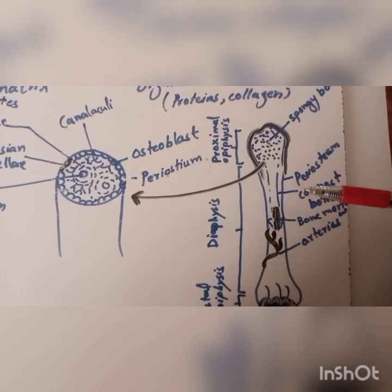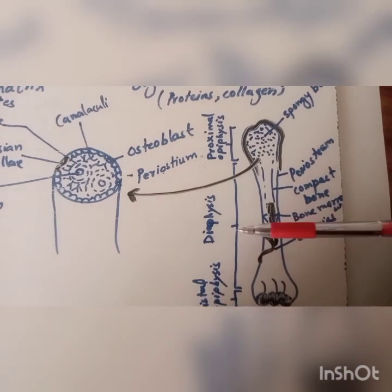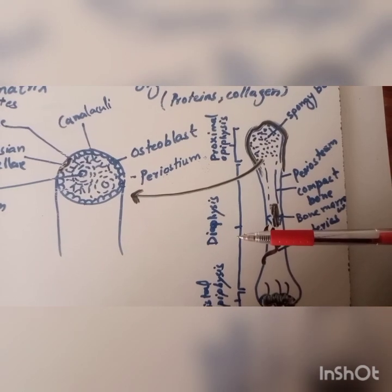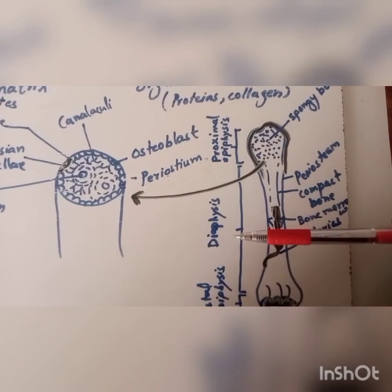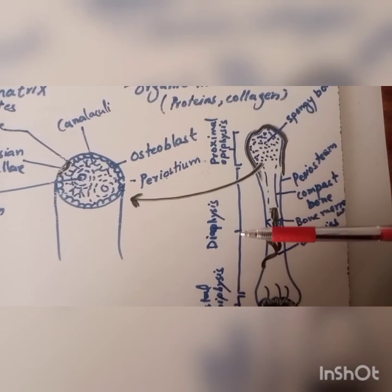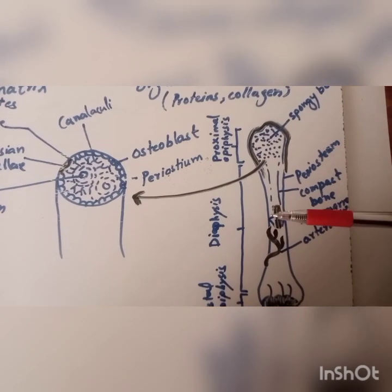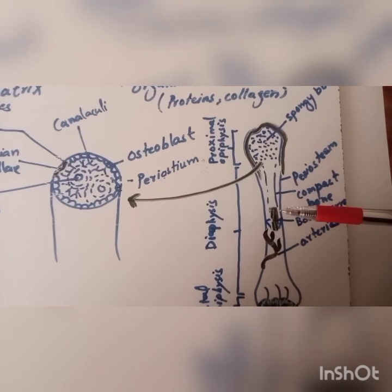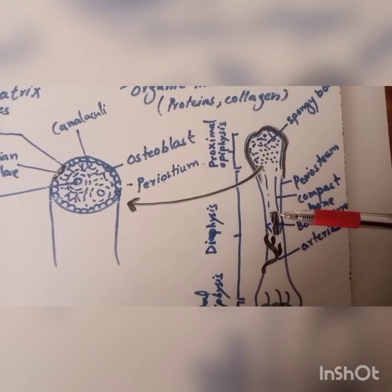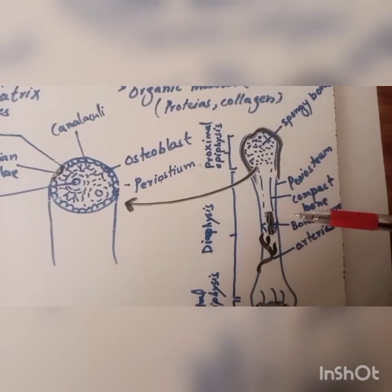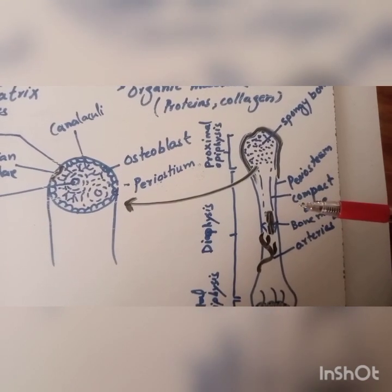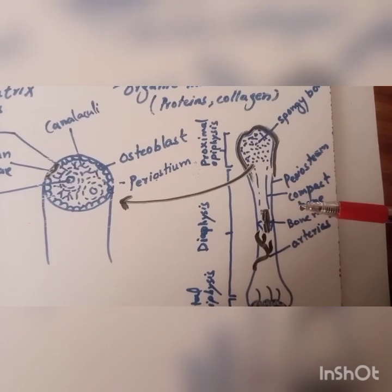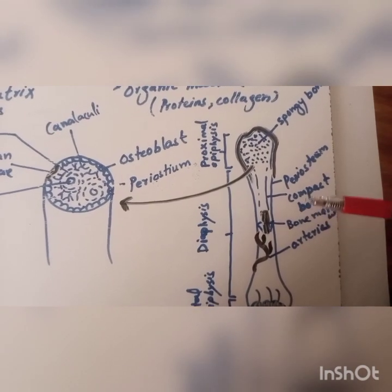While the yellow bone marrow that is filled with fat, is present in the diaphysis. This yellow bone marrow consists mostly of fat cells and serves as an energy reserve. It can also be converted to red bone marrow and produce red blood cells when severe blood loss occurs.